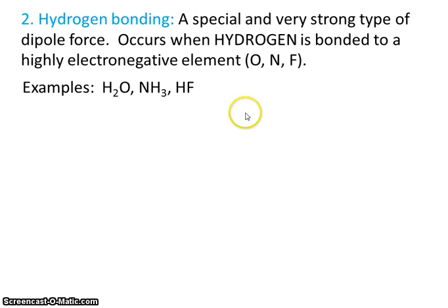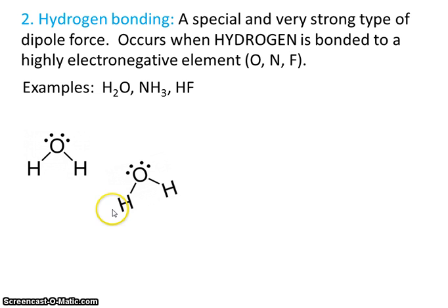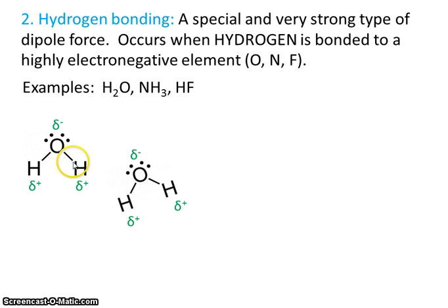Examples would be water, ammonia, and hydrogen fluoride. Here's a molecule of water — we've seen this before with the partially positive and partially negative charges. Remember, hydrogen has to be bonded to a highly electronegative element like oxygen. Here's hydrogen, and you can see that it's bonded to the highly electronegative oxygen.